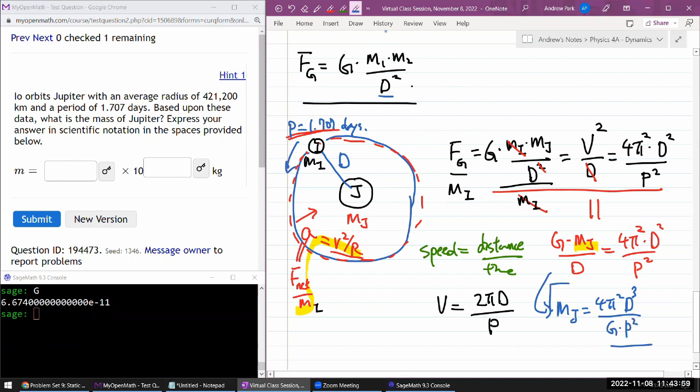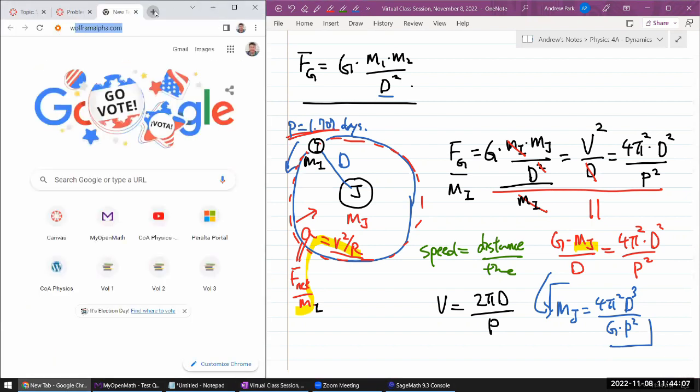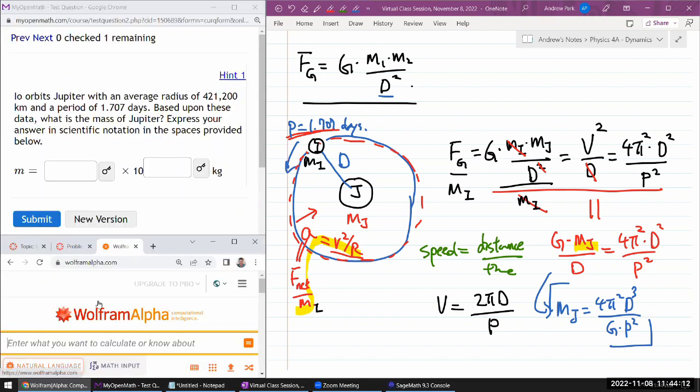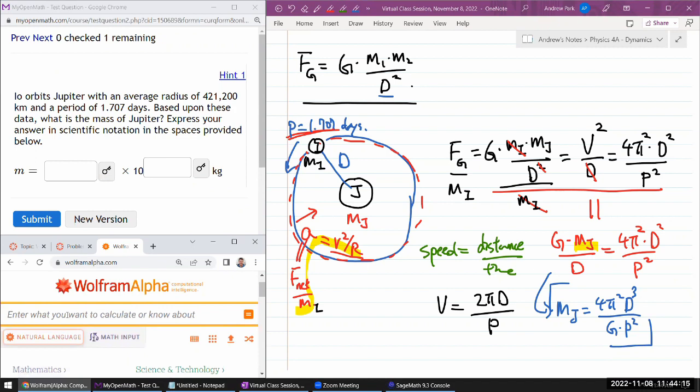Let me plug in this number in the, not in SageMath, but in Wolfram Alpha. Because Wolfram Alpha has this additional benefit of being able to check the units. If I made any algebra mistake, it'll kind of show up in units being wrong. So mass of Jupiter, which we could also look up, but we're going to calculate. 4 times pi squared times the distance that they gave us. 421,200 kilometer cubed. Divide by gravitational constant times the period. 1.707 days squared.